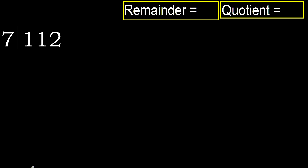112 divided by 7. 1 is less, therefore next. 11 is not less, therefore with 11. 7 multiplied by which number is nearest to 11.